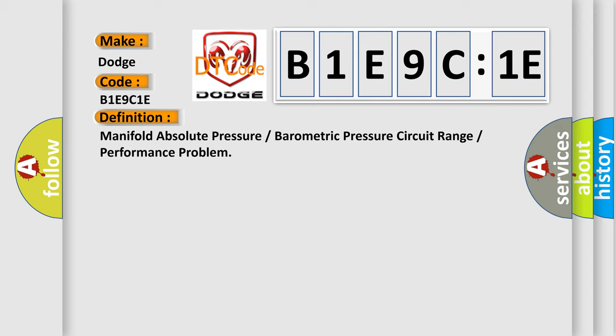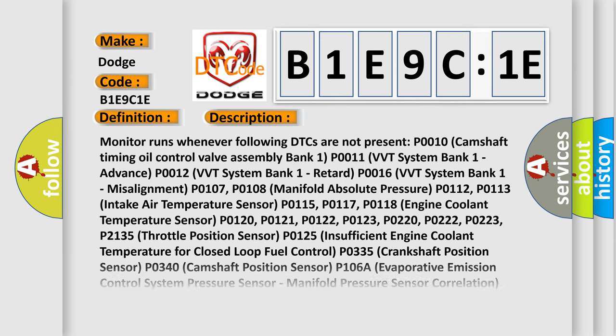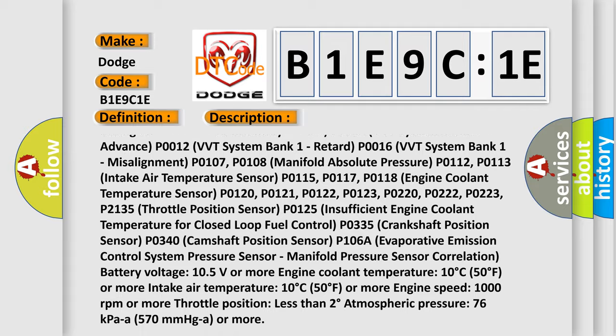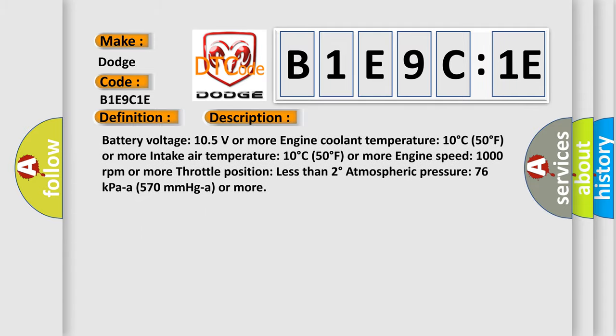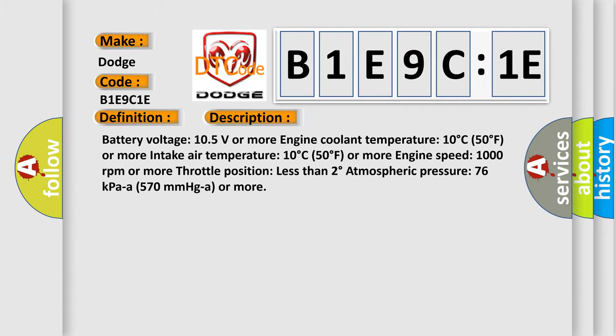Battery voltage 105 volts or more, engine coolant temperature 10 degrees Celsius or 50 degrees Fahrenheit or more, intake air temperature 10 degrees Celsius or 50 degrees Fahrenheit or more, engine speed 1000 revolutions per minute or more, throttle position less than 2 degrees, atmospheric pressure 76 kPa or 570 mmHg or more.